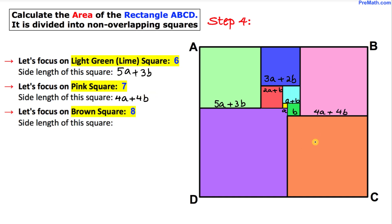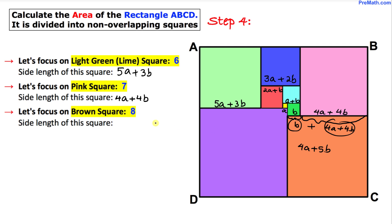Now let's focus on this brown square. The side length of this square is just the sum of the green and the pink lengths. So if we add b plus 4a plus 4b we get 4a plus 5b. So the side length of this brown square is 4a plus 5b.